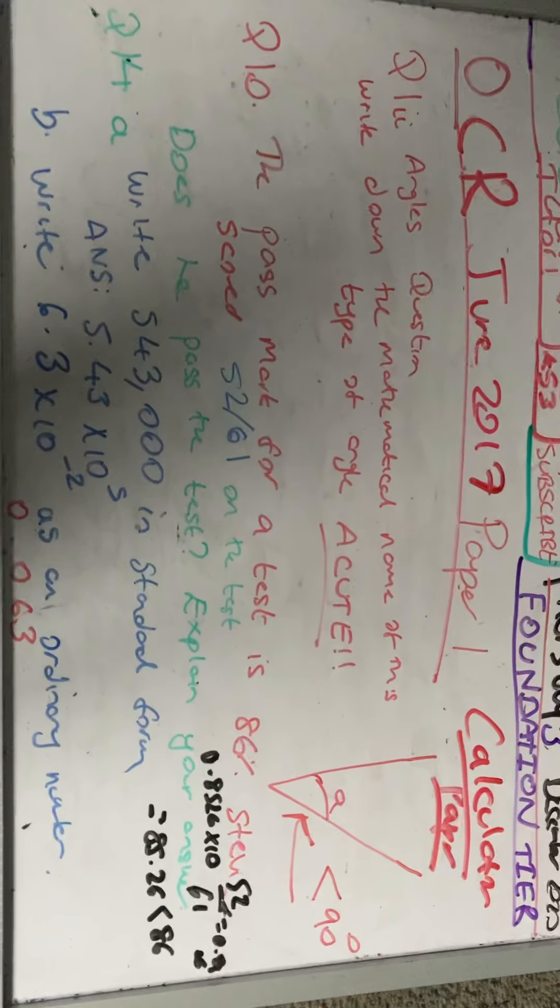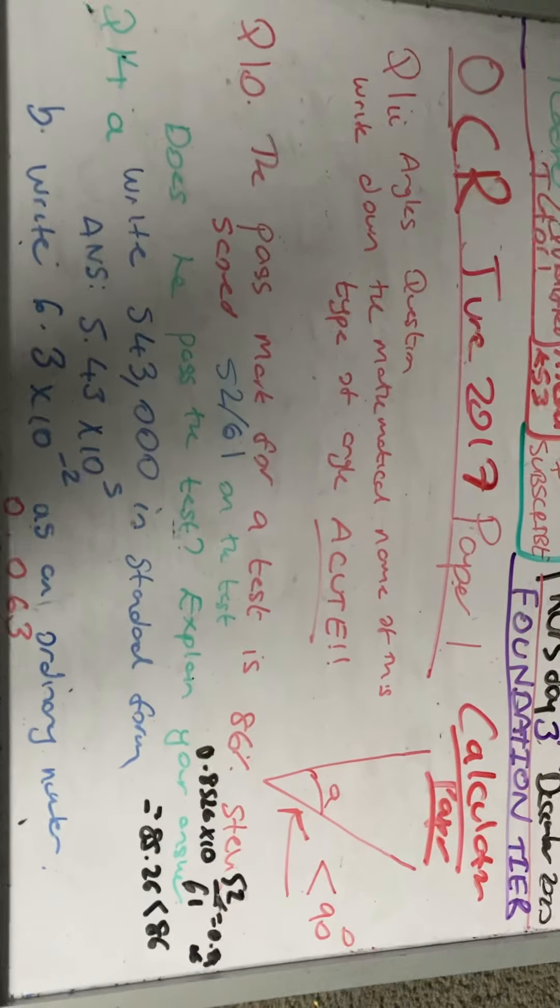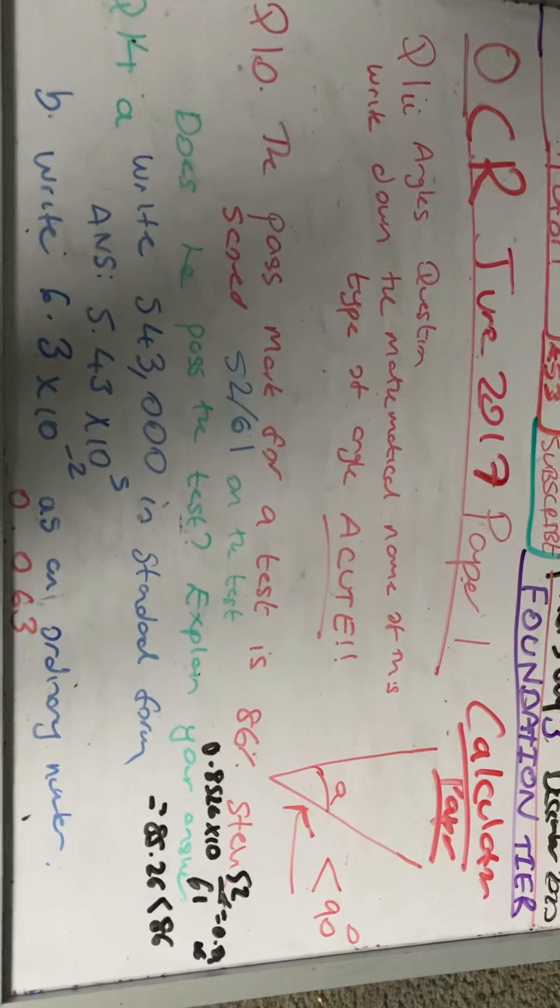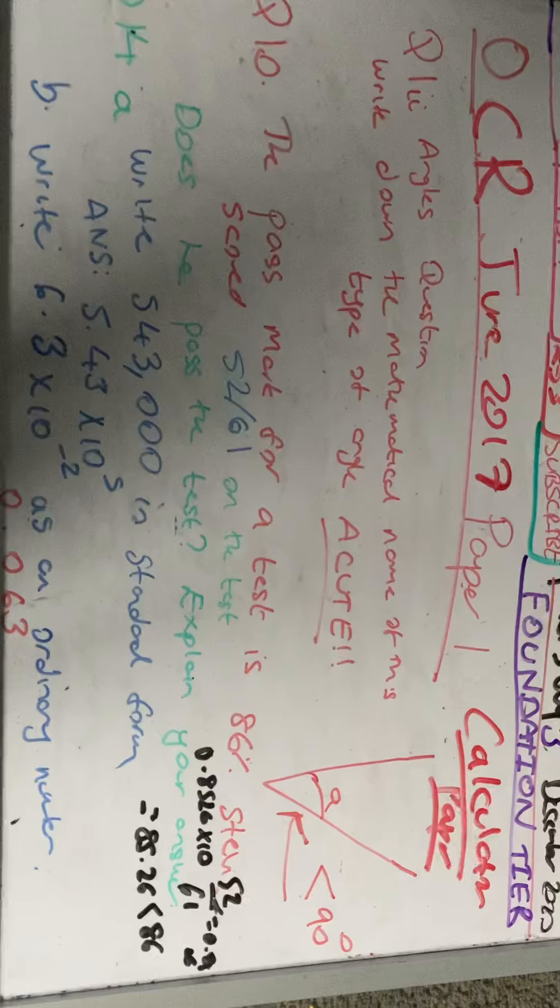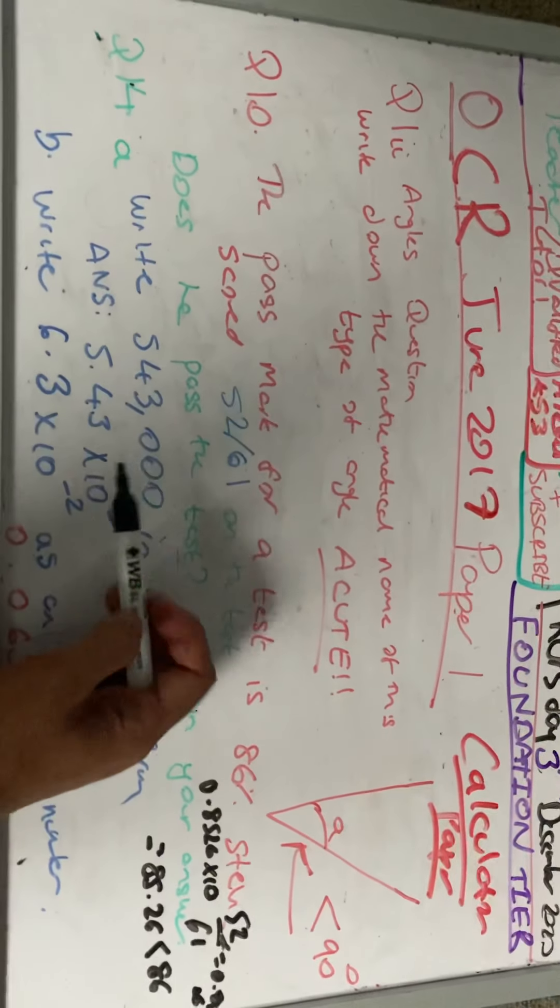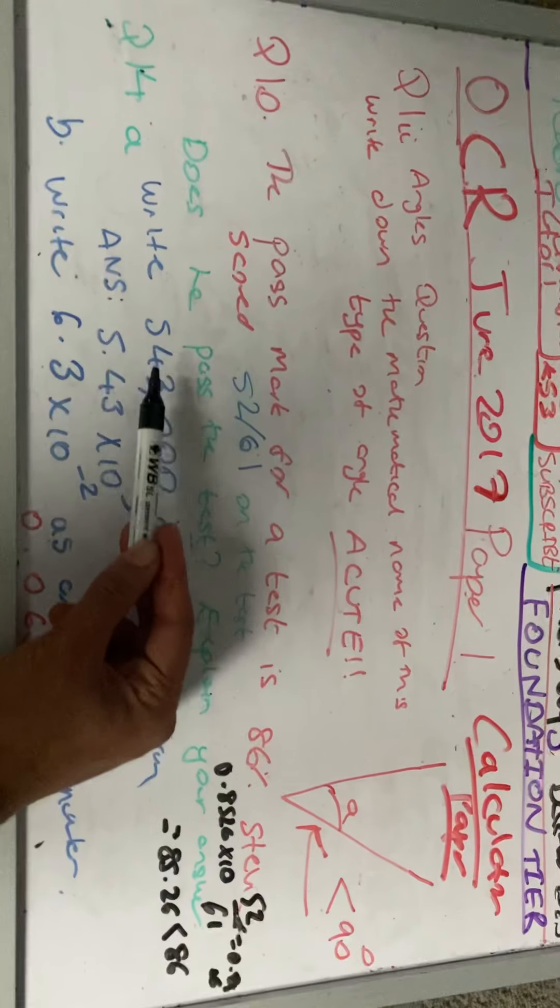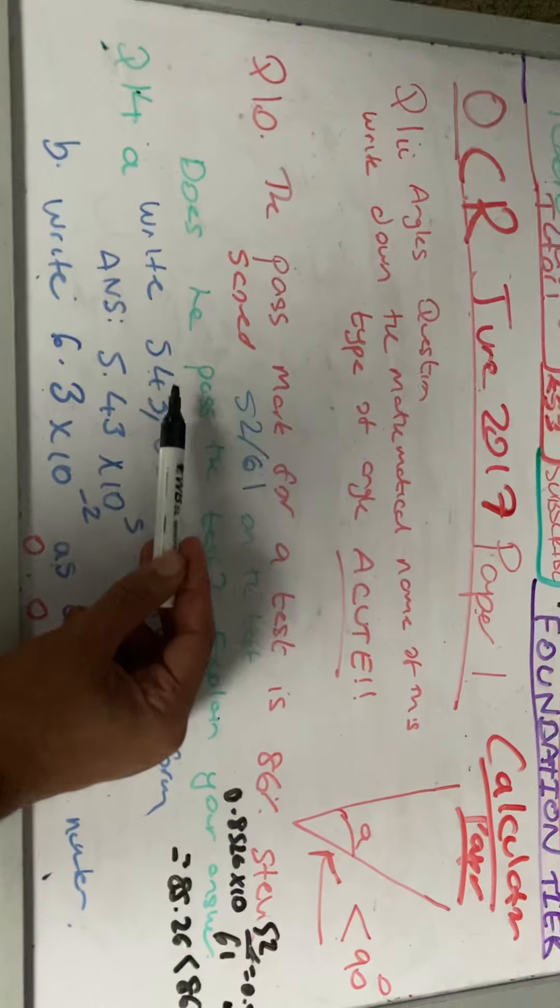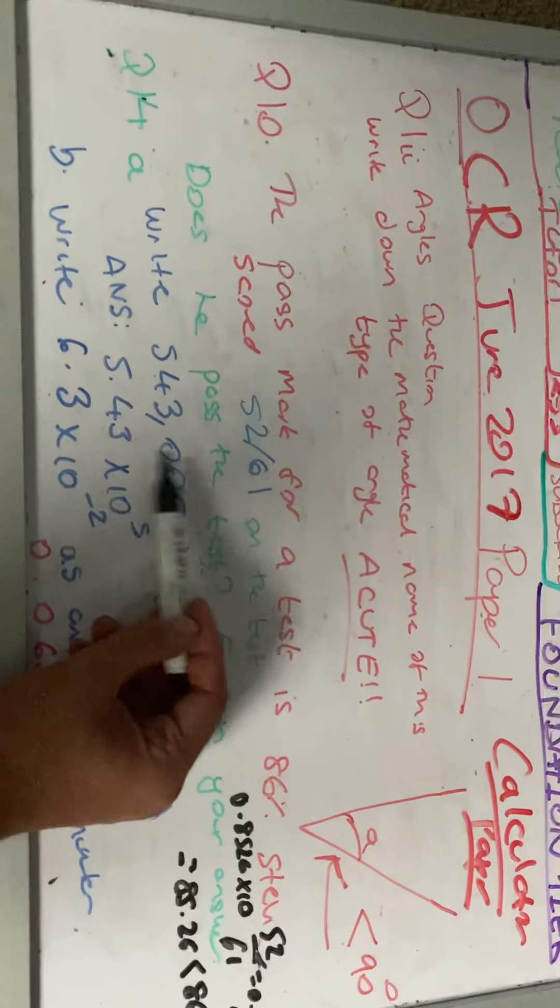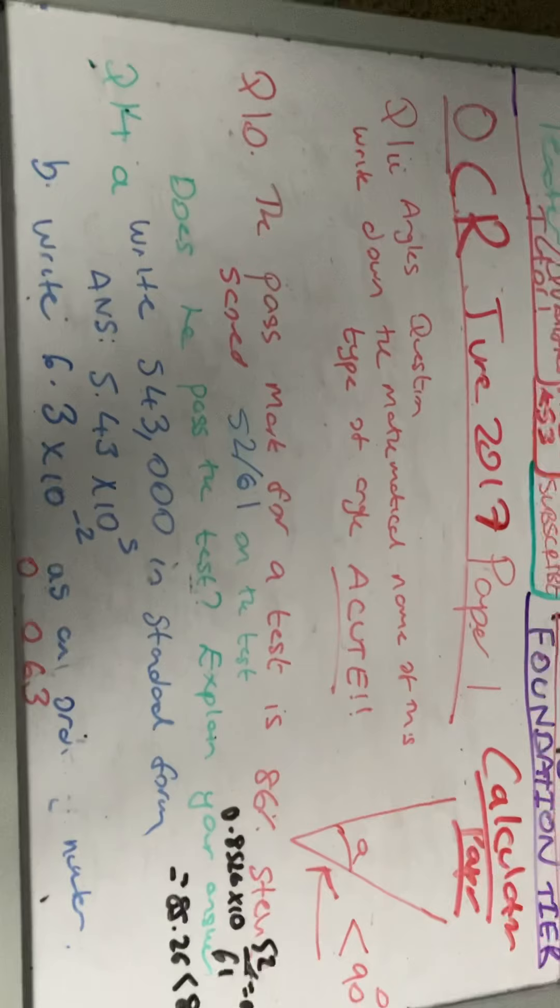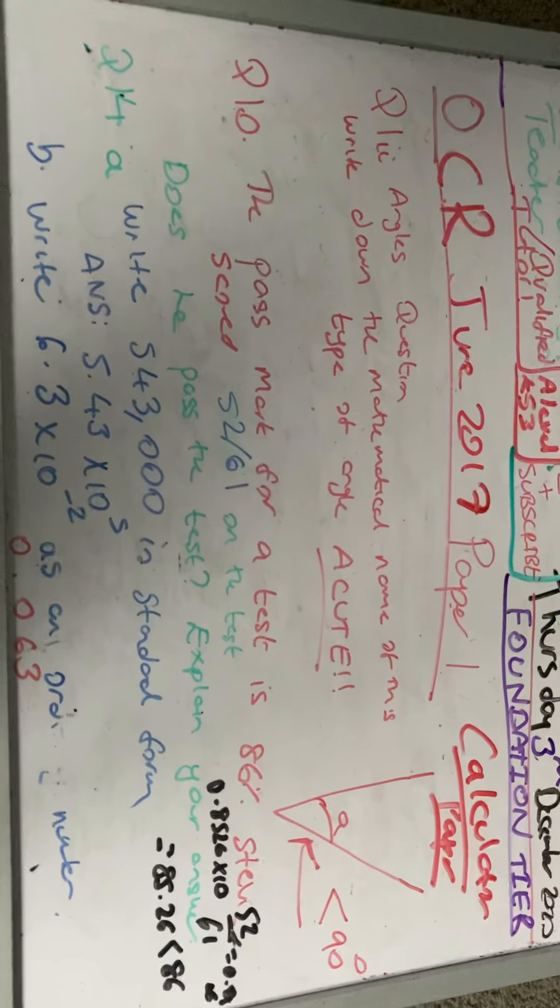That's a big number, so it's going to be times 10 to a positive power. So the answer is 5.43 times 10 to the power of 5. The number between 1 and 10 here is 5.43. Put a decimal point there. And then it's 1, 2, 3, 4, 5. So the answer is 5.43 times 10 to the power of 5.